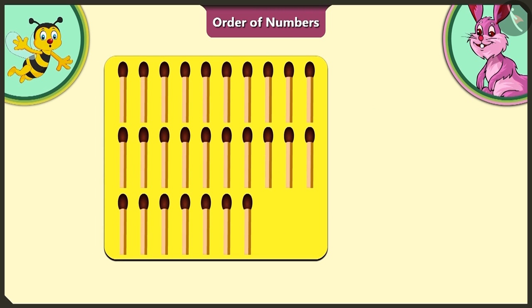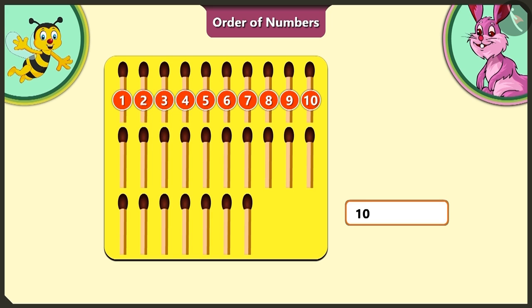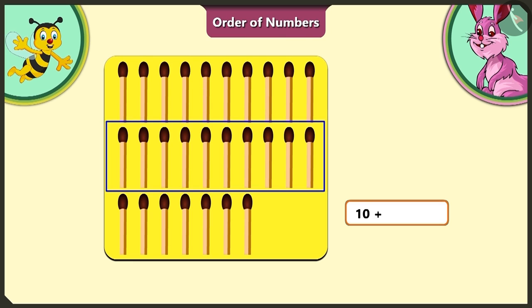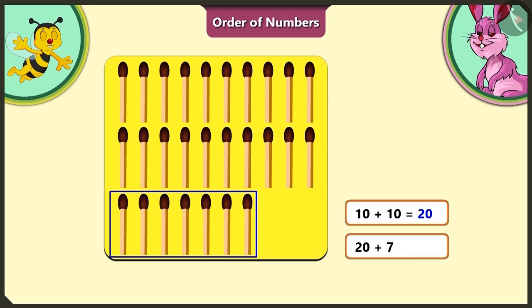Let's see the first group of matchsticks on the yellow card. There are 1, 2, 3, 4, 5, 6, 7, 8, 9, 10 matchsticks. To this first group of 10 matchsticks, we add the next group. There will be a total of 20 matchsticks and adding the remaining 7 matchsticks to this, we get a total of 27 matchsticks.